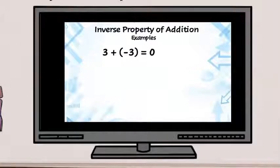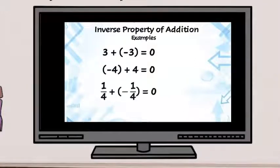I end up with zero. So negative 4 plus 4 equals zero. 1 fourth plus negative 1 fourth equals zero. And x plus negative x equals zero.